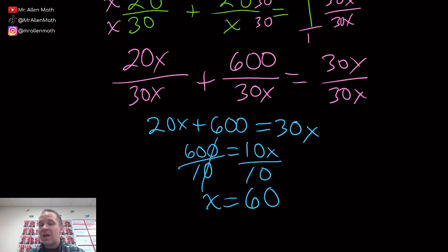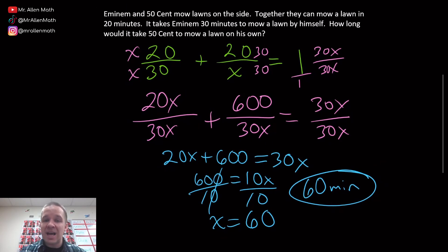So what does this mean in the context of our problem? This means it's going to take 60 minutes for 50 Cent to mow a lawn on his own. So they can mow it together in 20 minutes. Eminem takes 30. 50 Cent, apparently, he's taking his time, 60 minutes to finish it, but together they can do it in 20 minutes. There we go. So we figured out the rate at which it takes 50 Cent to mow a lawn on his own. They're doing a company, not just mowing his own lawn. He's mowing other people's lawns, making that cash.